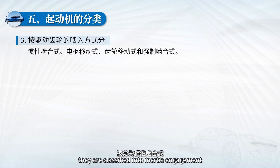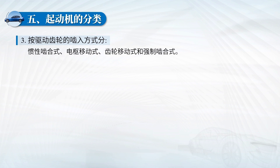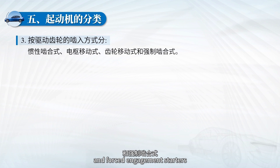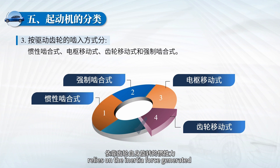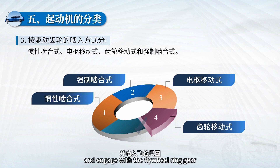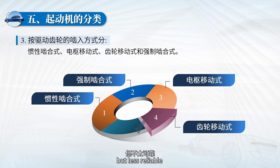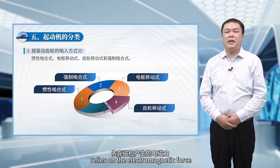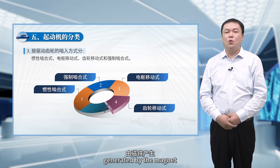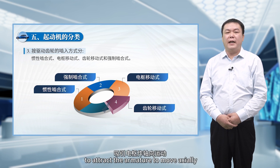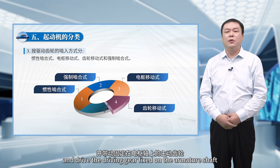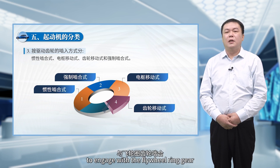Based on the engagement mode of the driving gear, starters are classified into inertia engagement, armature movement engagement, gear movement engagement, and forced engagement types. The inertia engagement type relies on the inertia force generated by gear rotation to produce axial movement and engage with the flywheel ring gear; it is simple but less reliable and rarely used today. The armature movement type relies on electromagnetic force to attract the armature to move axially, driving the gear fixed on the armature shaft to engage with the flywheel ring gear.